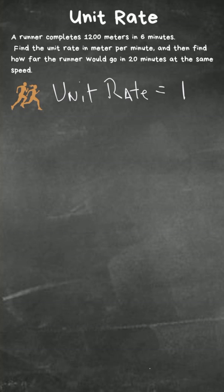we need to find how many meters this runner is going in one minute. So let's do this by dividing 1200 by 6, and that will give us how far this runner goes in one minute. Six goes into